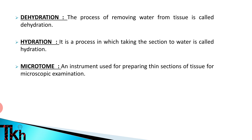The next definition is microtome. Microtome is an instrument used for preparing thin sections of the tissue for microscopic examination. After the tissue goes through the different processing steps, the final step is cutting and trimming. We use the microtome for cutting and trimming the sections, and then we proceed to microscopic examination.